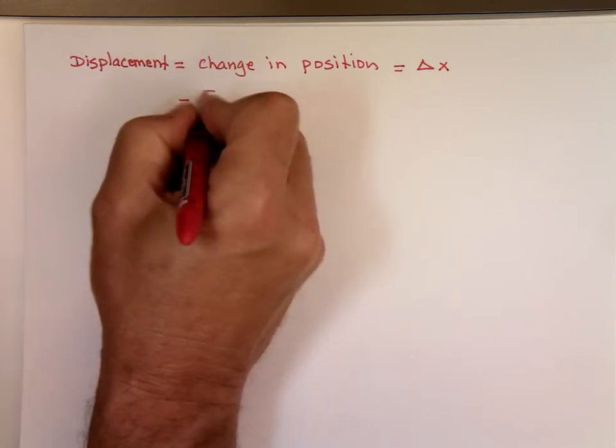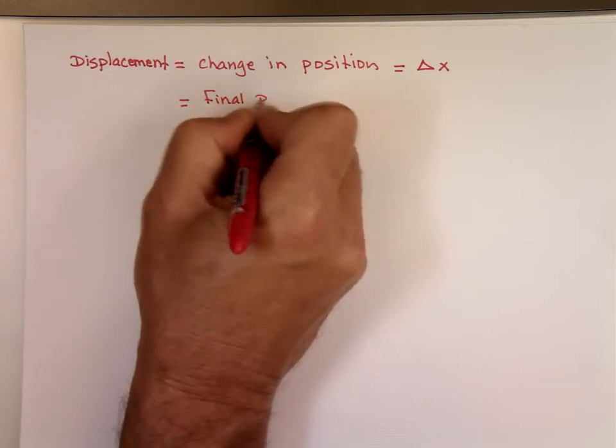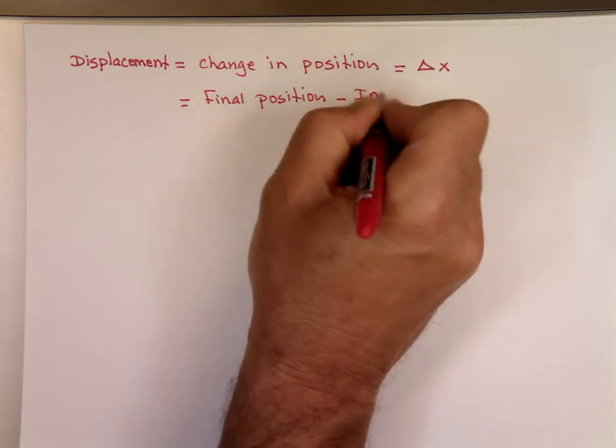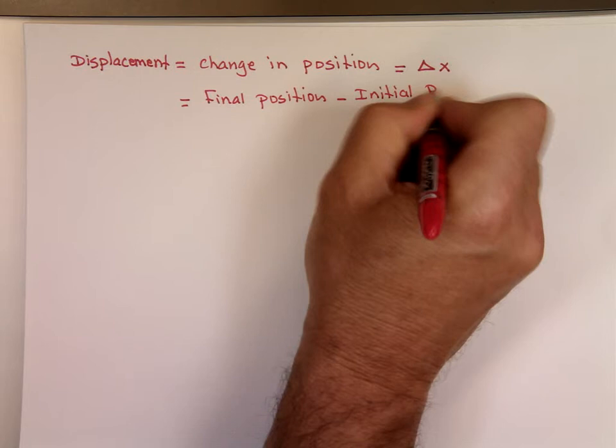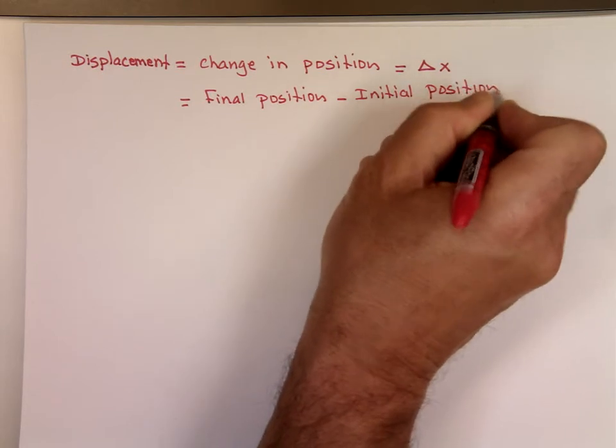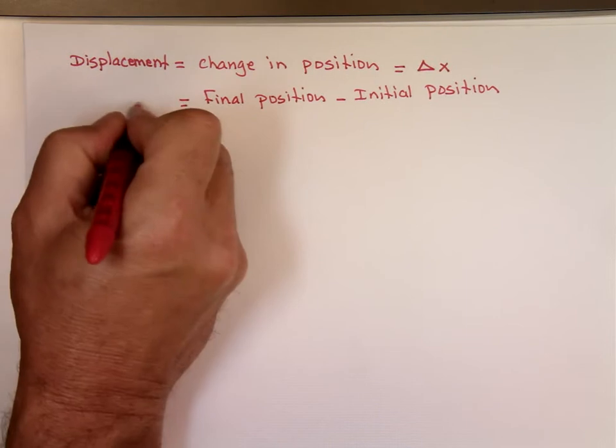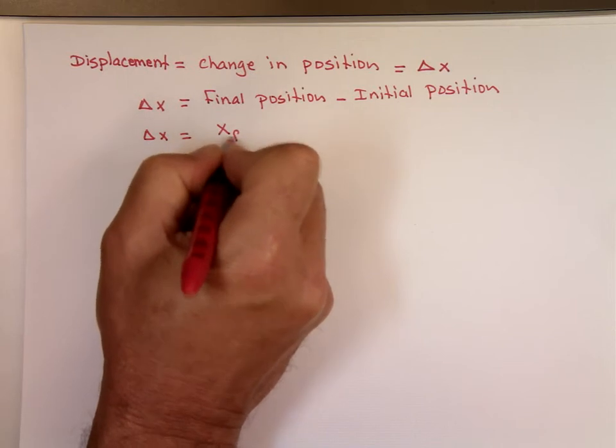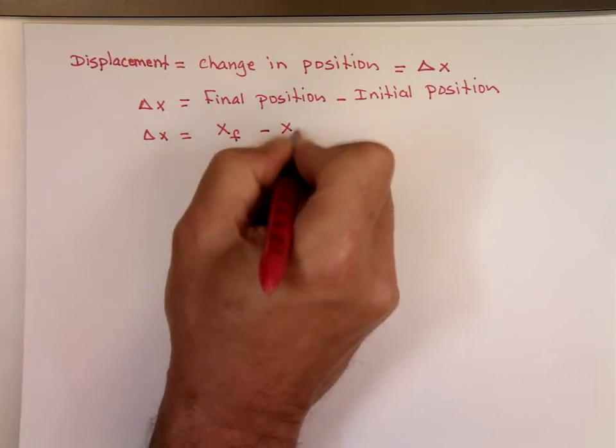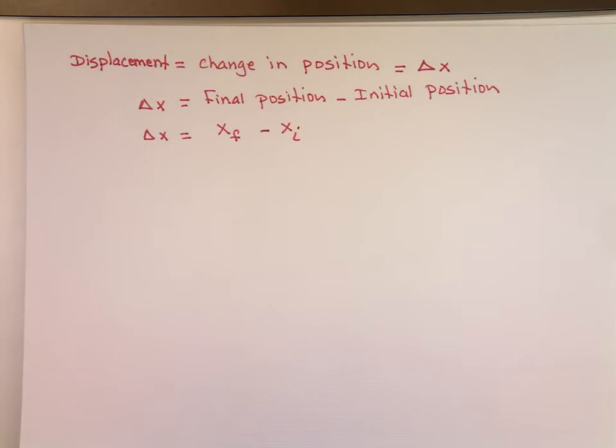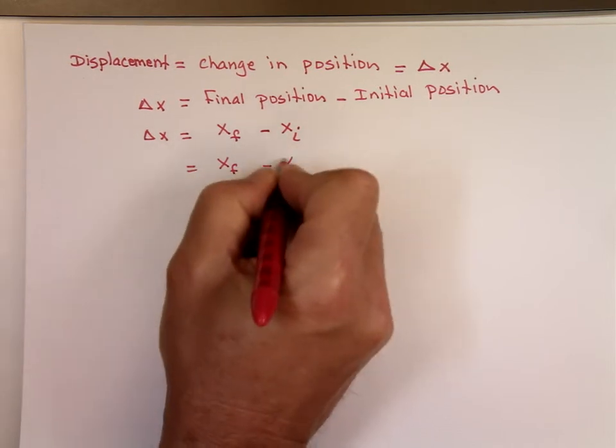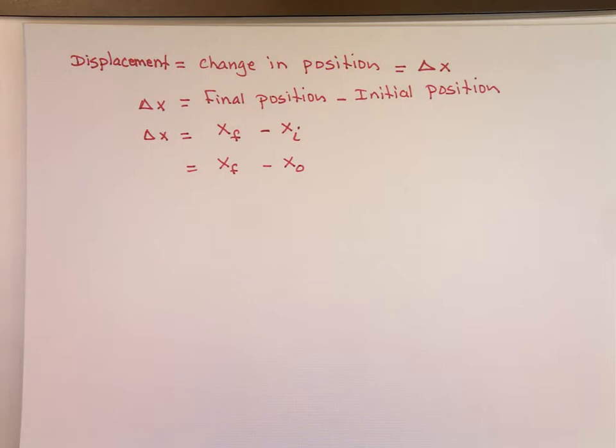The final position minus the initial position. That's what displacement is. Delta x, or displacement, is the final position, x final, minus the initial one, x initial. Don't be surprised if you see me write x final minus x₀. A lot of times we use 0 for initial, like the zero time. So x_i or x₀ is the same thing.